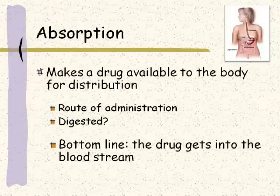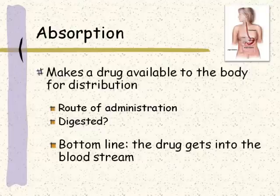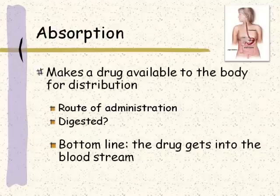Absorption is the process by which a drug is made available to the fluids of the body for distribution. How does the drug get into the body? That has to do with route of administration — is the person swallowing it, or is it being injected into them in some way? Does it need to be digested by the GI tract? Yes, it does if they take it by mouth. The bottom line is, with absorption, the drug gets into the bloodstream. Absorption makes the drug available to the body for distribution.